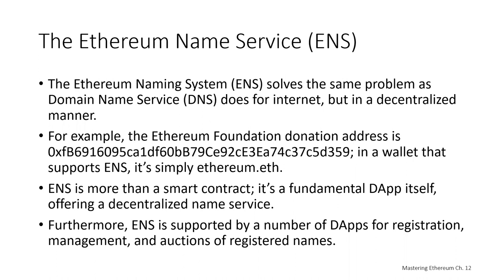You can design the best smart contract in the world, but if you don't provide a good interface for users to access that smart contract, then they're not going to use it. On the traditional internet, we have the Domain Name System, or DNS, which allows us to use human-readable names in the web browser while resolving those names to IP addresses or other types of identifiers behind the scenes.